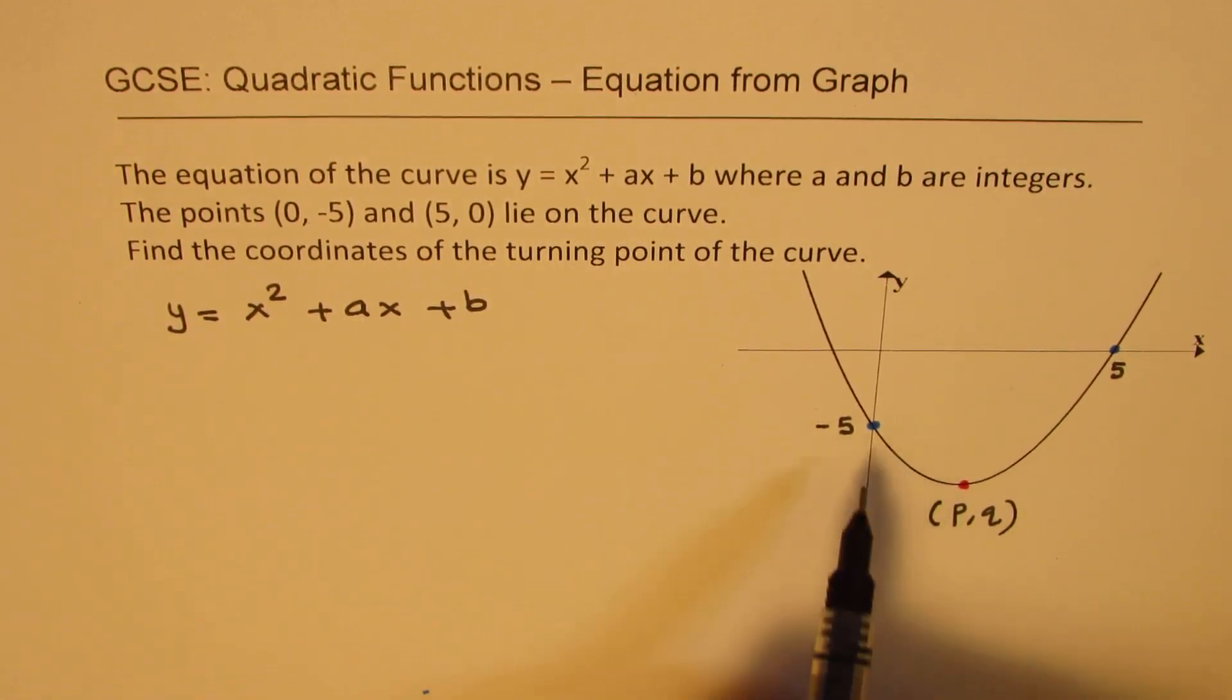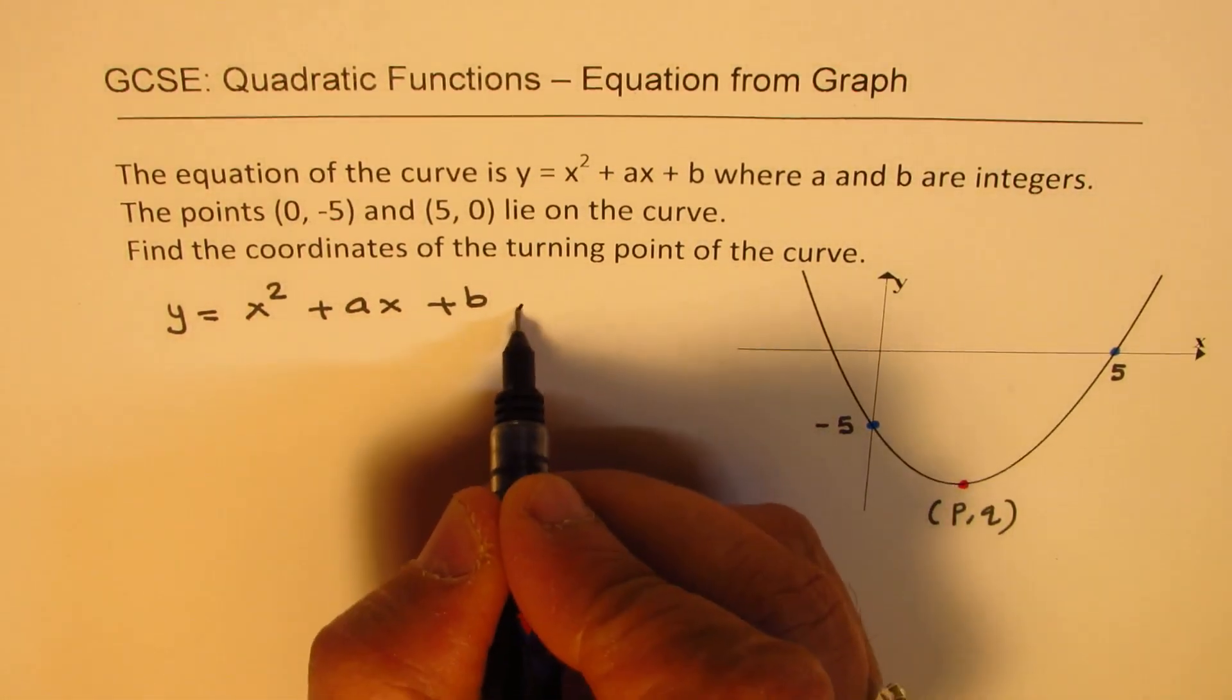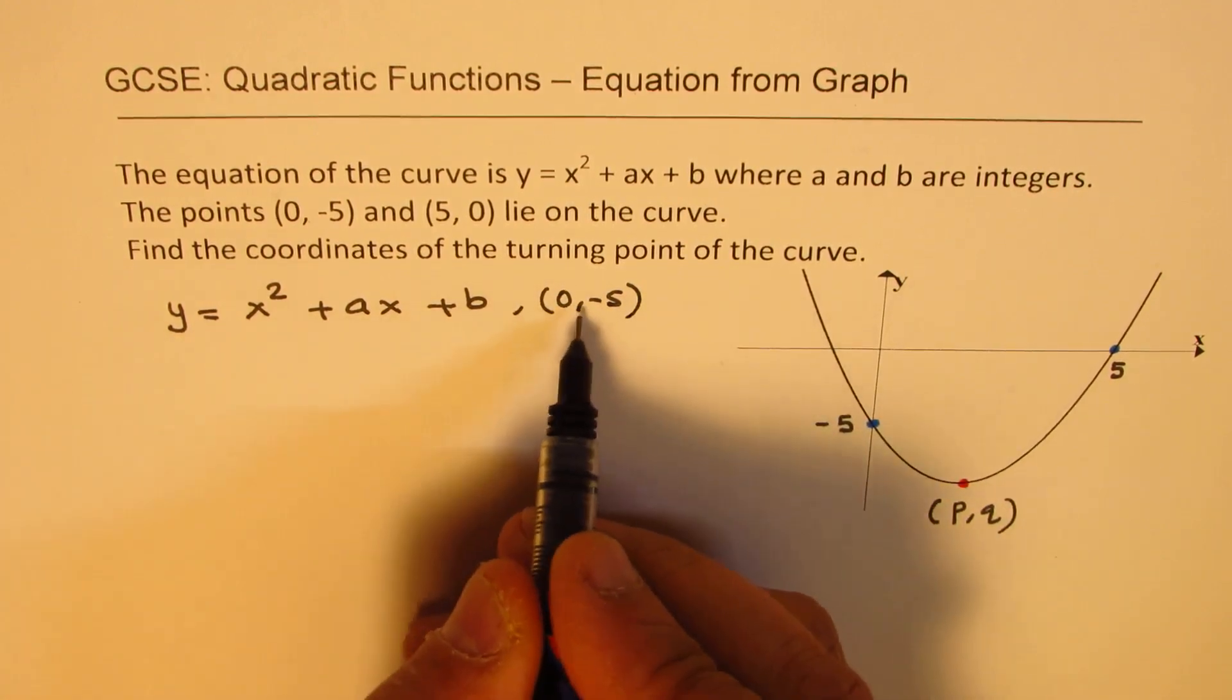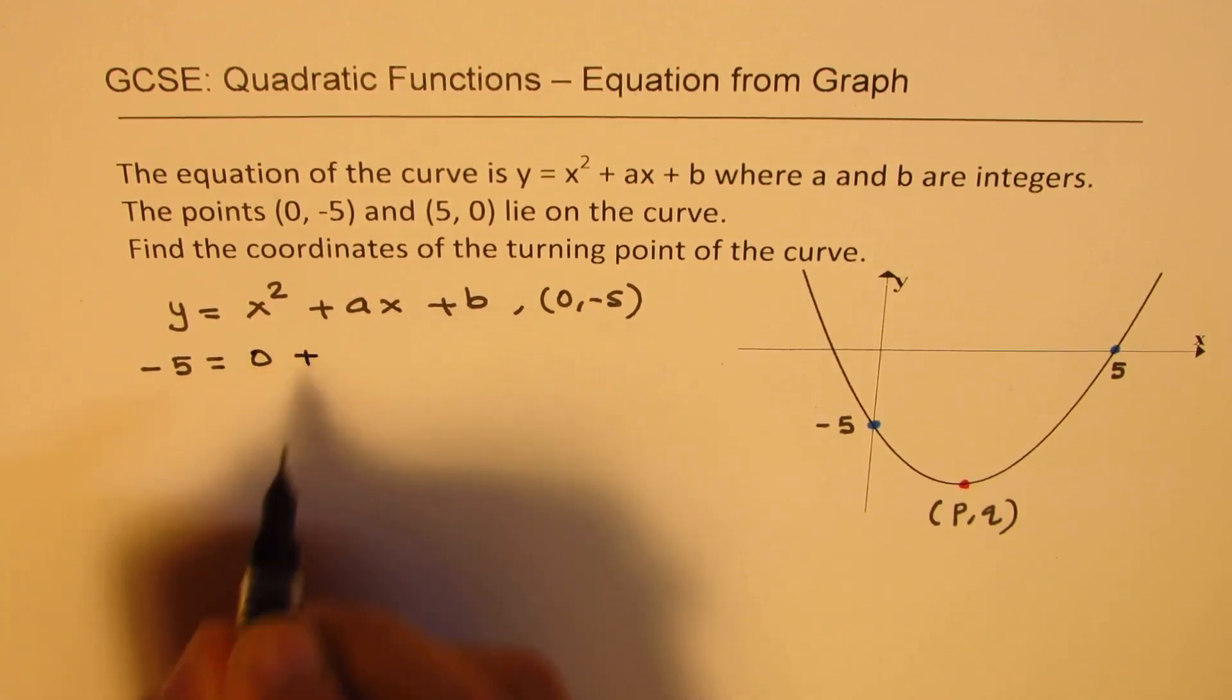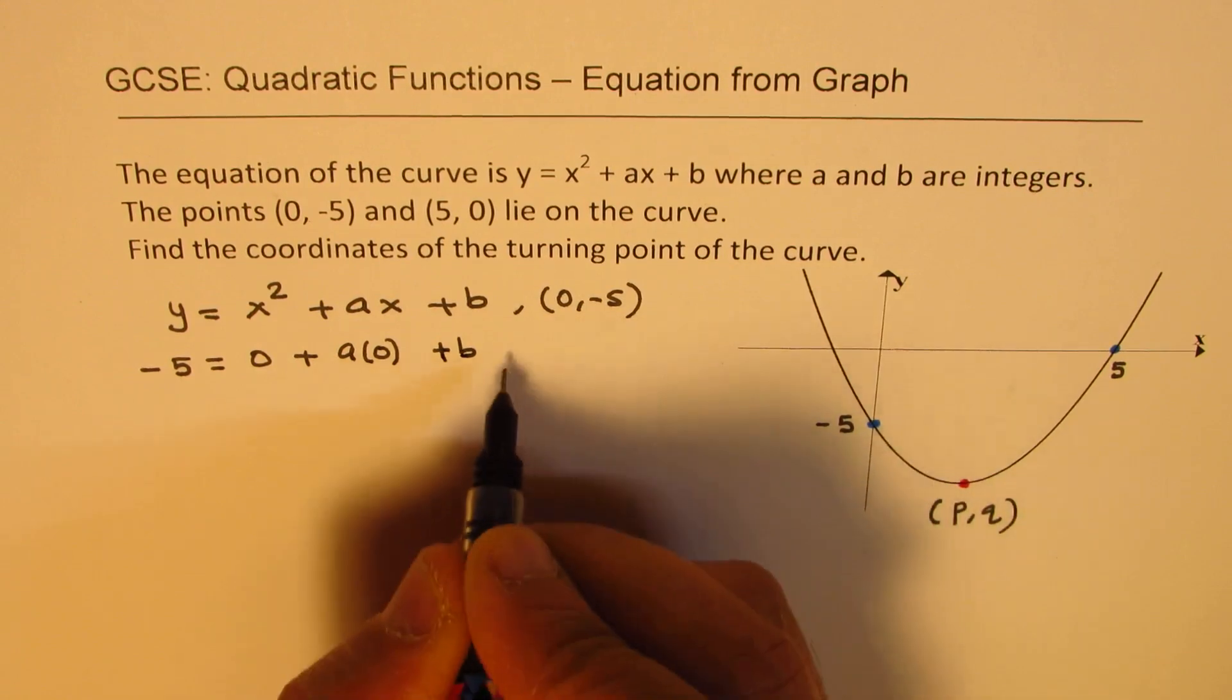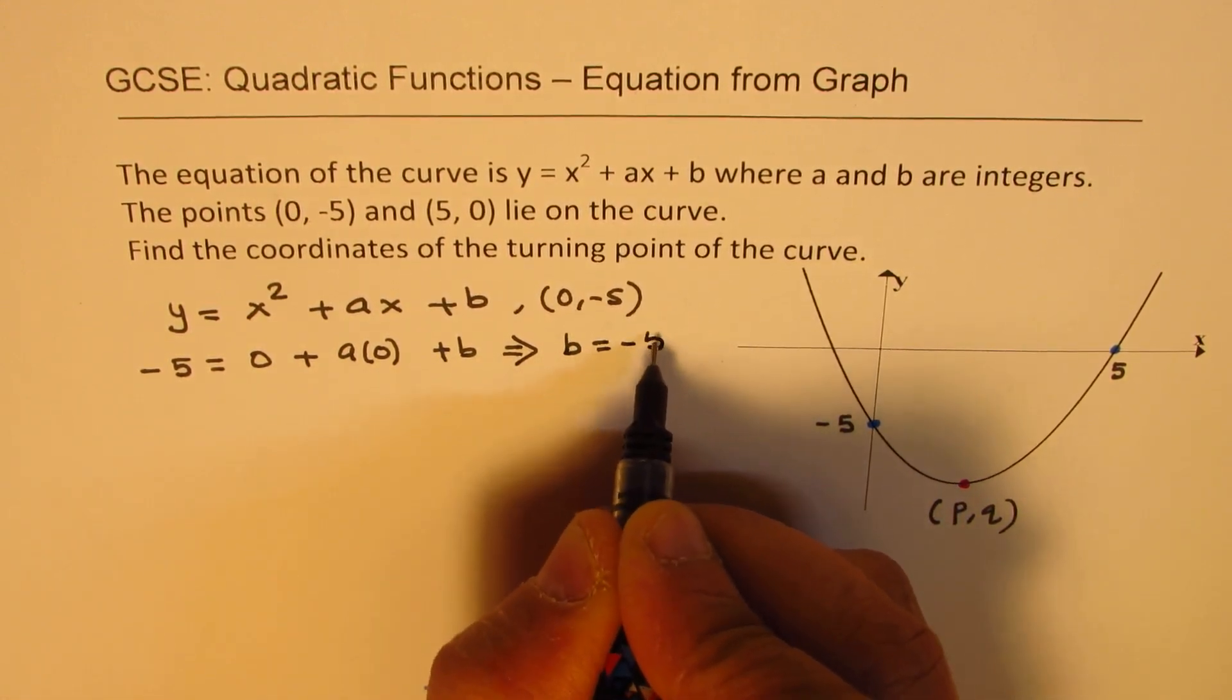We can substitute these points one by one. So the first point (0, -5): if I substitute x is 0, y is -5, we get -5 equals 0 plus a times 0 plus b. That gives you the value of b as equal to -5.